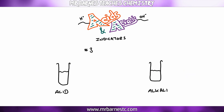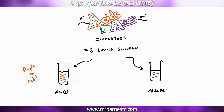The third and final indicator you need to know is litmus solution. Litmus solution starts off purple. If you put it into an acid it will go red, and if you put it into an alkali it will go from purple to blue.